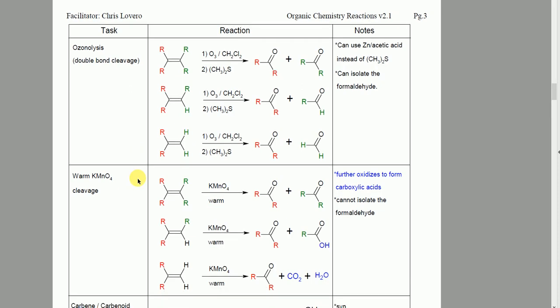Our first set of reactions has to do with double bond reactions. We've learned how to substitute things in double bonds, we've learned how to form some double bonds, and now we're going to learn how to oxidize double bonds. Oxidation is increasing the bondage to oxygen — essentially increasing oxygen bonds. So we're going to replace these double bonds with individual oxygen double bonds.